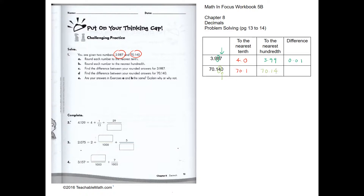The difference is 0.04. For question 2: 4.129 can be written as 4 plus 0.1 plus 0.029. To change 0.029 to a fraction, we count 1, 2, 3 place values, so it's going to be over one thousand. So this is 29 over 1000.